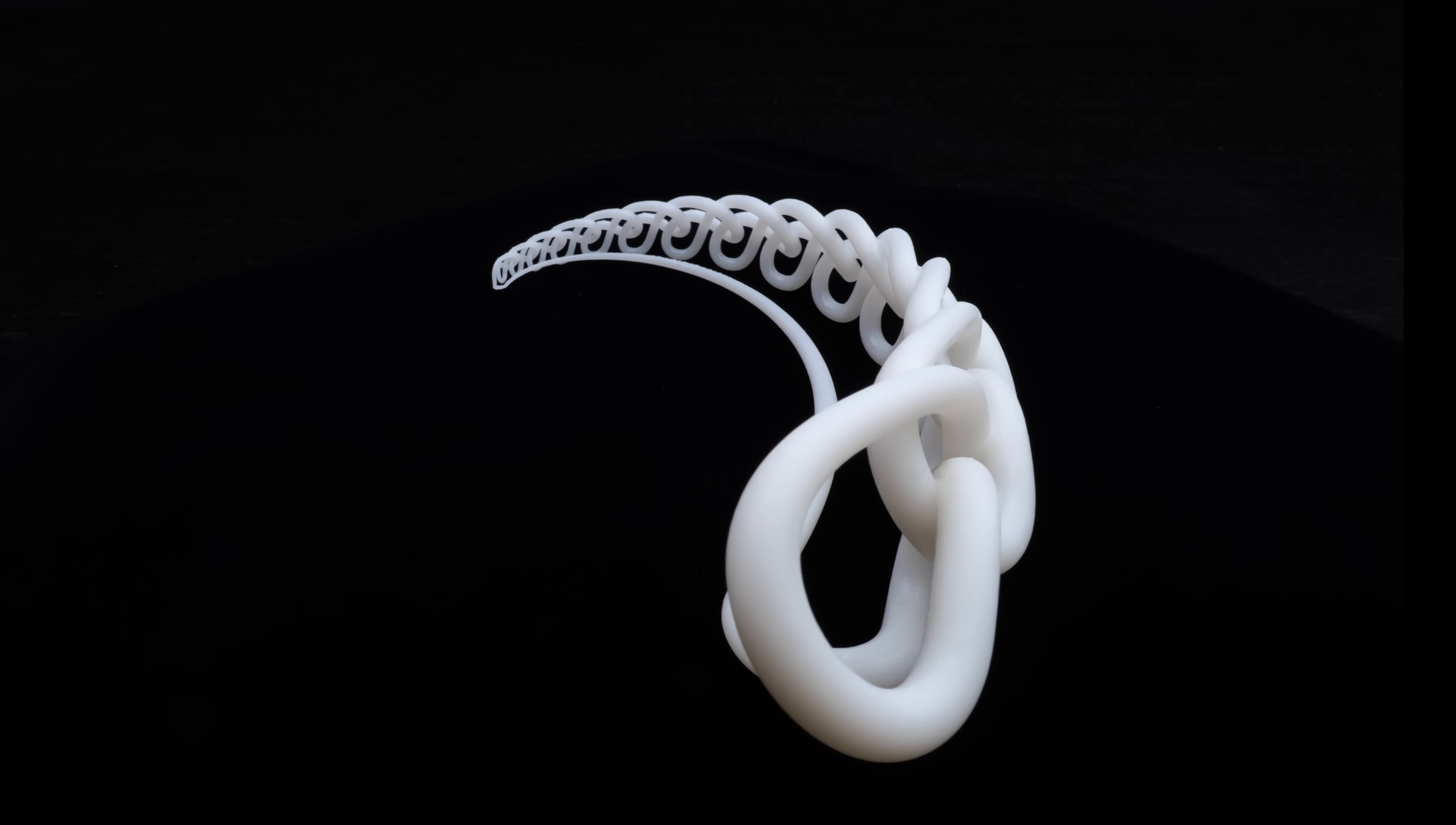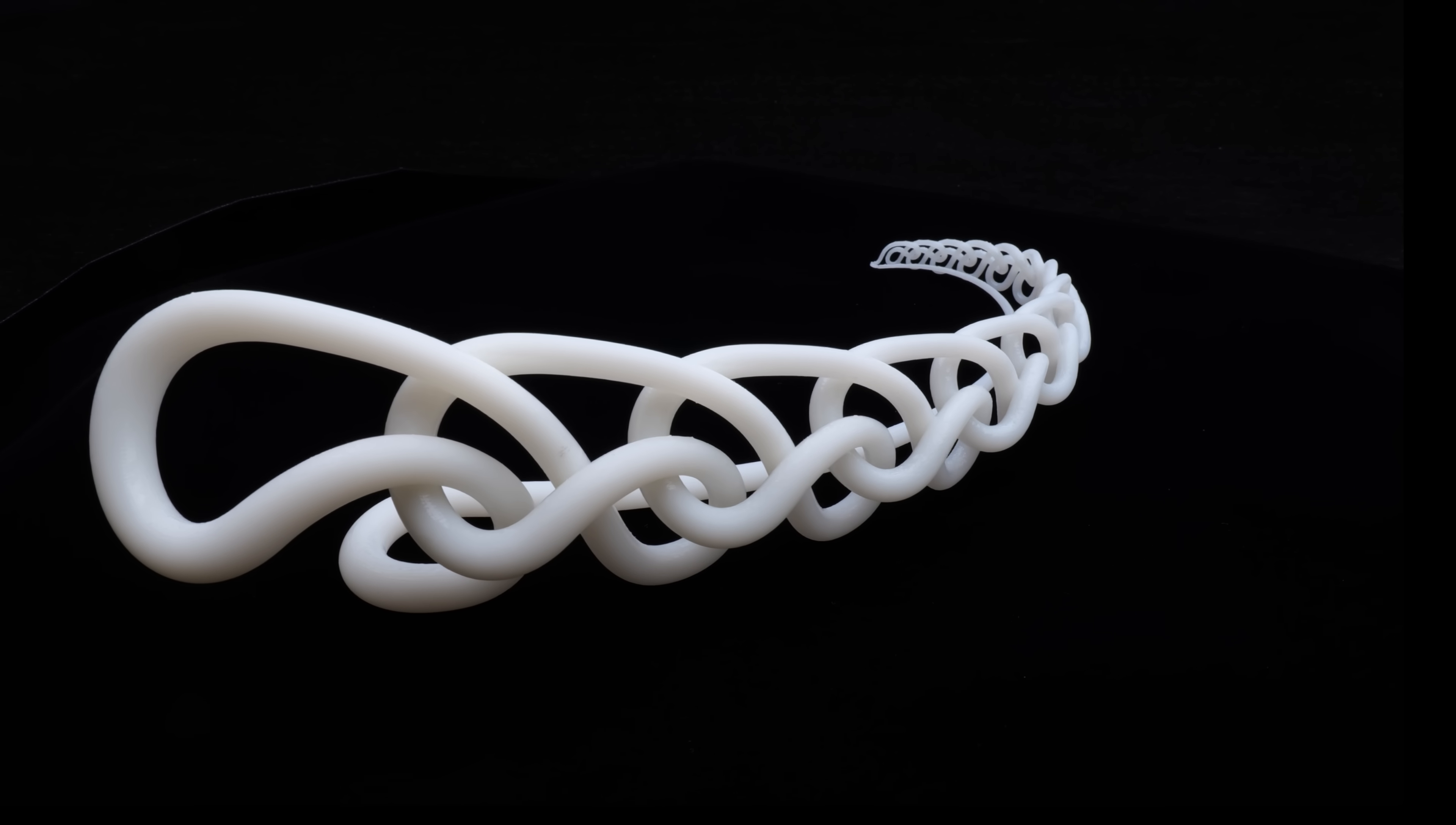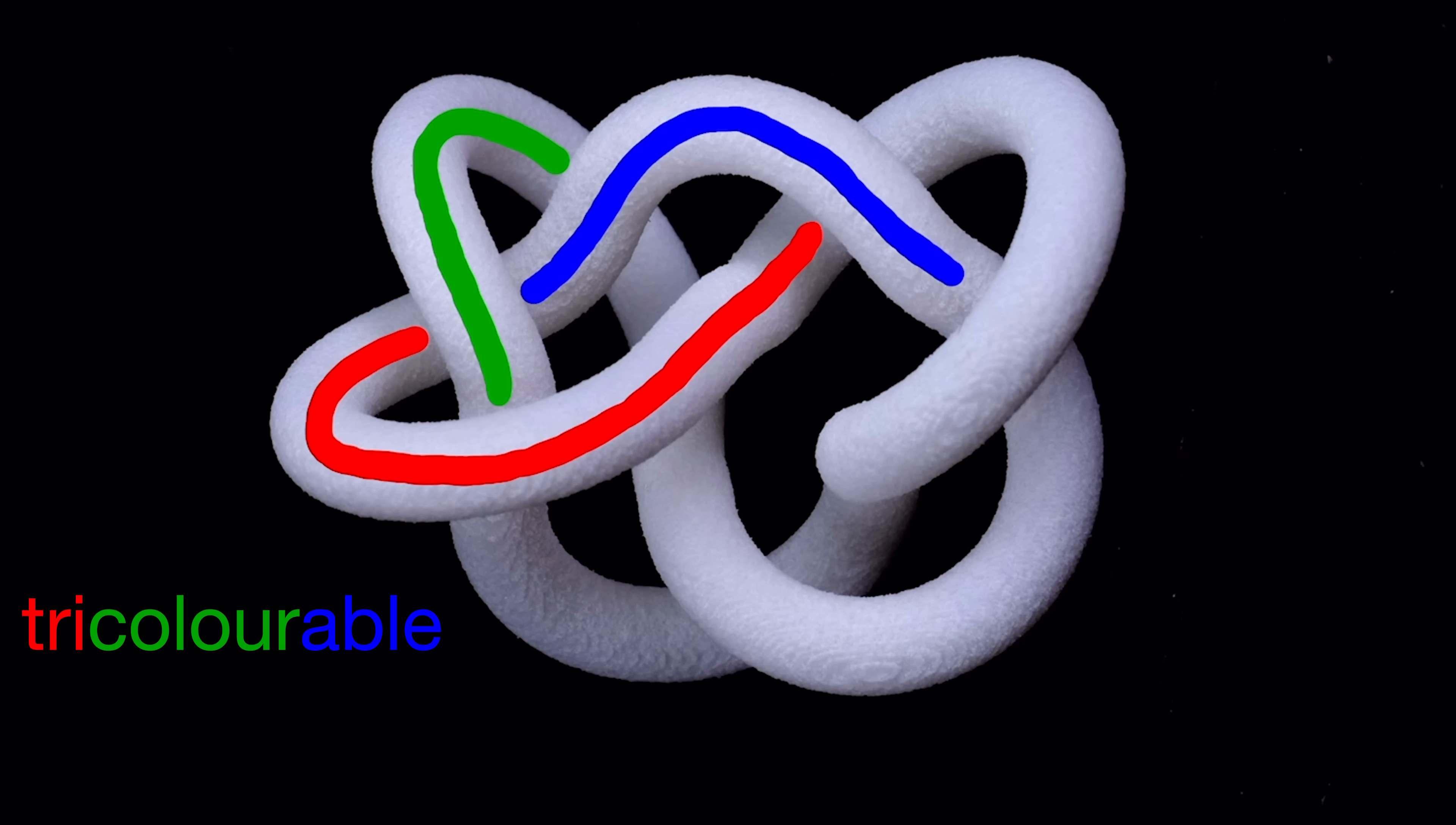I won't go into the full details, but I can at least wave in the general direction of a proof that this is not the unknot, that this isn't the same as a circle. One of the ways you can show that a knot is not the unknot is to show that it is tri-colourable.